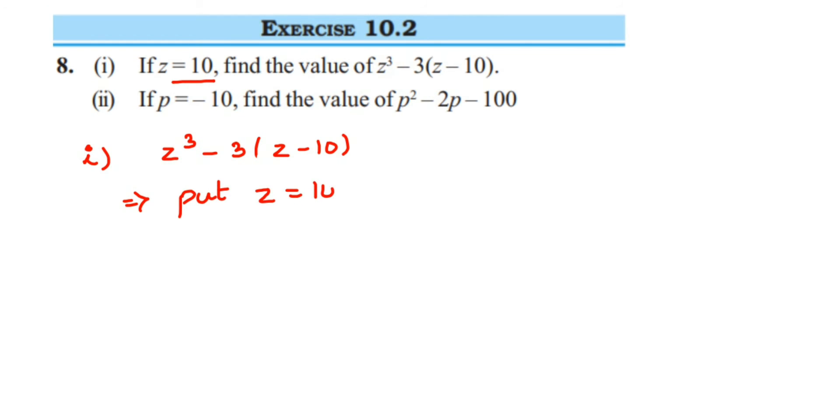So it is 10 cube minus 3 into... 10 cube is nothing but 10 into 10 into 10, which is 1000, right? So we will get here 1000 minus 3 into 10 minus 10 is 0. So 3 into 0 will become 0. So this will be 1000 minus 0, which is equal to 1000. So it's a very simple question. We got the answer here, 1000.